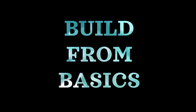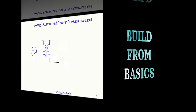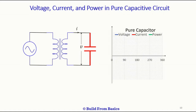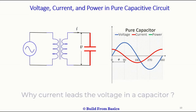Welcome to Build From Basics YouTube channel. Let's talk about the relation between voltage, current, and power in a pure capacitive circuit. Here the AC source is supplying a capacitive load. The instantaneous voltage, current, and power waveforms are given in this figure. The blue waveform is the voltage waveform and red is the current waveform.